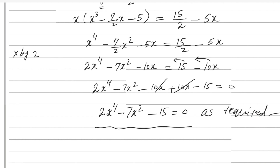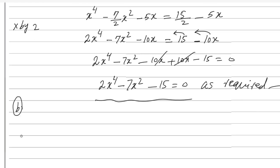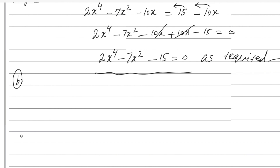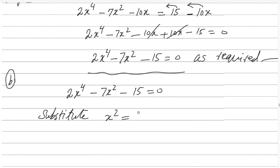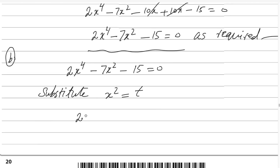We will solve it because it is quadratic in terms of X². I will show you how to solve it by factorization — that method will be easier here. So we have 2X⁴ minus 7X² minus 15 equals 0. Since the power is 4, we can substitute X² with a new variable T, making it a standard quadratic. X⁴ is (X²)² so it becomes T². Therefore we get 2T² minus 7T minus 15 equals 0.